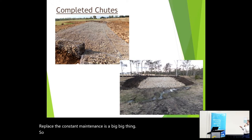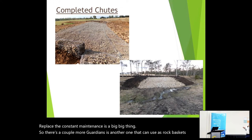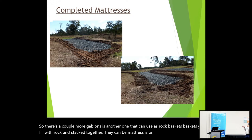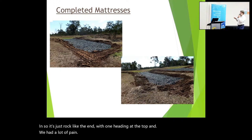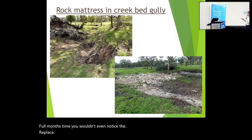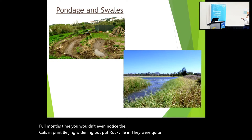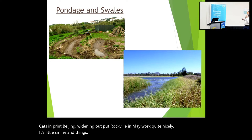A couple more: gabions — rock baskets you can fill with rock and stack together — can be mattresses or just boxes. You can use mattresses for narrow cracks, so it's just rock laid down with wire netting over the top. With a lot of pangola grass, that just grew all over the top of that — 12 months time you wouldn't even know it was there. Creek bed cuts: you can widen them out, put rock fill in and they work quite nicely, as long as you spread it out and get your swales and pondage sorted.